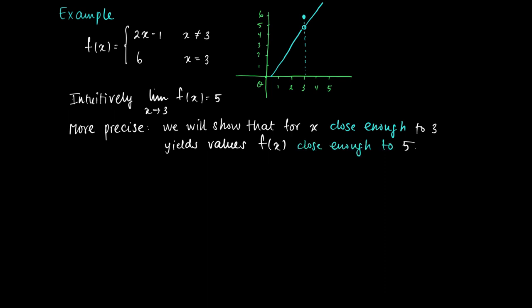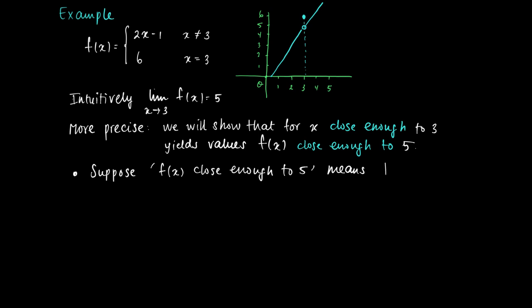What is close enough? What values of x are close enough? Suppose we have a particular opinion that f(x) being close enough to 5 means that the absolute value of f(x) minus 5 is at most 1/37. Now, 1/37 is of course somewhat arbitrary, but suppose we insist on this value as our precise meaning. So we know that if |f(x) − 5| ≤ 1/37, then we are happy.